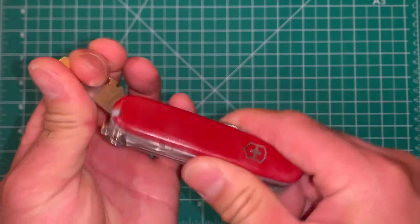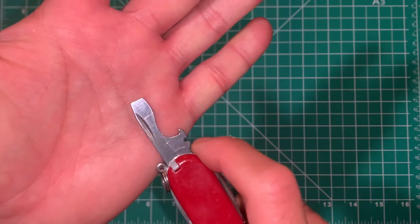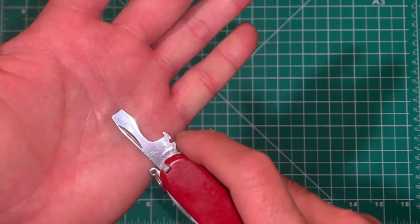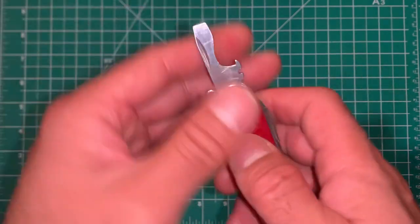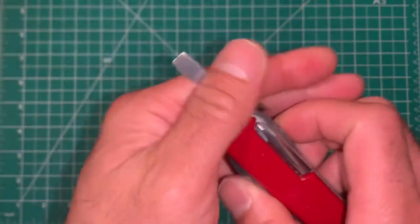Then you've got the large flathead bottle opener with the wire crimper/stripper, and you've got a little pry tool capability.